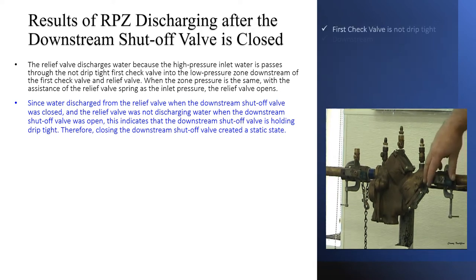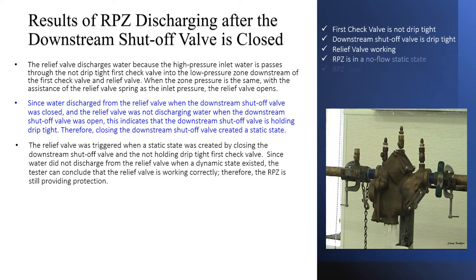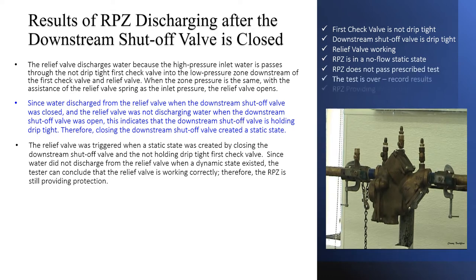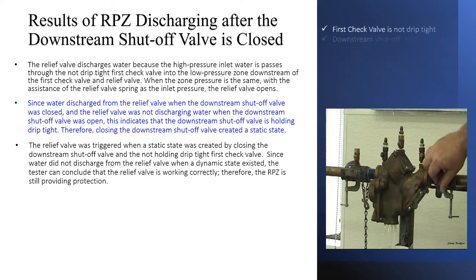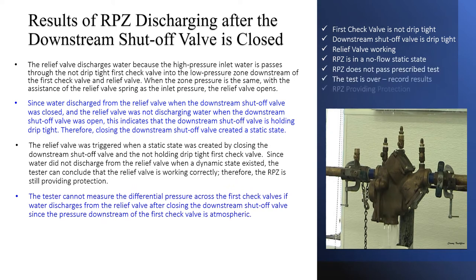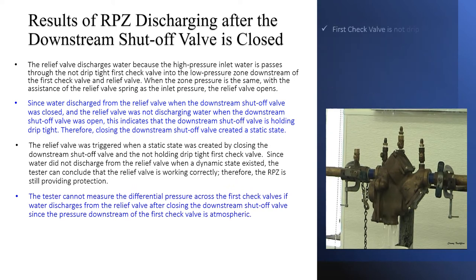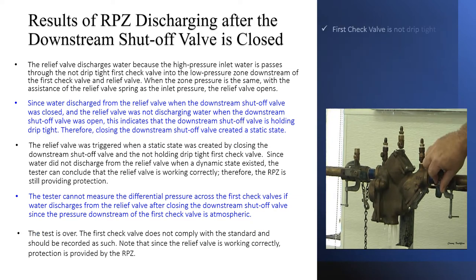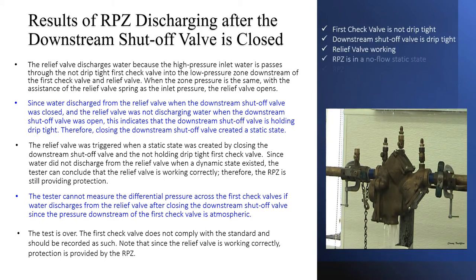Therefore, closing the downstream shutoff valve created a static state. The relief valve was triggered when a static state was created by closing the downstream shutoff valve and the not-drip-tight first check valve. Since water did not discharge from the relief valve when a dynamic state existed, the tester can conclude that the relief valve is working correctly, and the RPZ is still providing protection. The tester cannot measure the differential pressure across the first check valve if water is discharging from the relief valve after closing the downstream shutoff valve, since the pressure downstream of the first check valve is atmospheric. The test is over. The first check valve does not comply with the standard and should be recorded as such. Note that since the relief valve is working correctly, protection is provided by the RPZ.